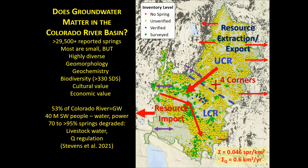Most springs are small but highly diverse — geomorphically and geochemically. Within the Colorado River Basin, we've identified at least 330 springs-dependent species of plants and invertebrates. The cultural and economic values are enormous — 24 tribes in the landscape regard springs as sacred. About 53% of the Colorado River is derived from groundwater, meaning springs. The river serves about 40 million people in the Southwest for water and power needs. However, 70 to 95% of the springs, depending on the area, have been degraded — primarily by livestock watering practices and flow regulation.